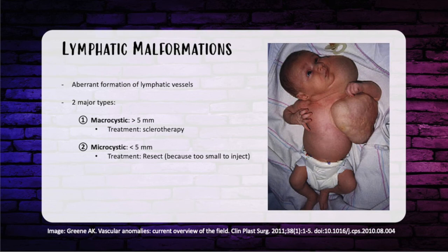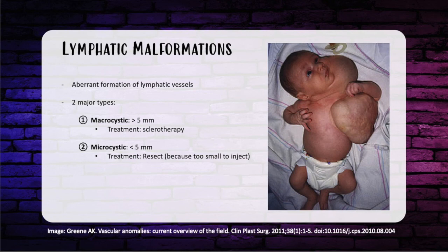Lymphatic malformation results from aberrant formation of lymphatic vessels and most commonly affects the neck and axilla. There are two major types: macrocystic (greater than 5 mm) and microcystic (less than 5 mm). Macrocystic lesions have cysts large enough to be cannulated, so treat with sclerotherapy — commonly using doxycycline, sodium tetradecyl sulfate, or ethanol. Microcystic lesions are too small to inject, so treat with resection. These lesions have a high recurrence rate.